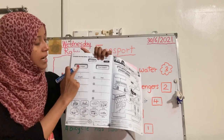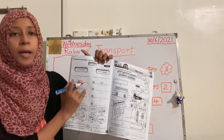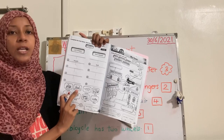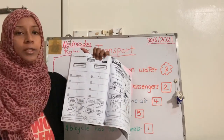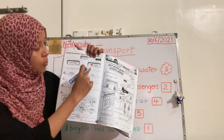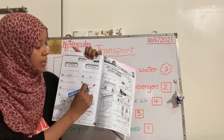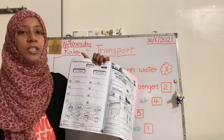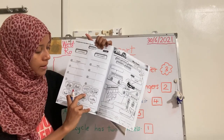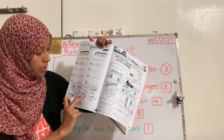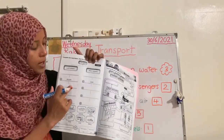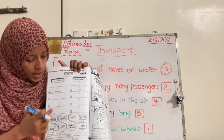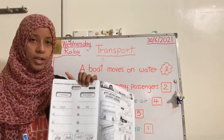Very good — bicycle is land transport, so you write 'bicycle' under land transport. It's already given. Picture number two: ship. Is ship land or water transport? Yes, ship is water transport, so write 'ship' under water transport. Number one, 'boat,' is already written. You have lorry, car, boat, bus, ferry — see the transport and write it in the correct category. It's very simple.